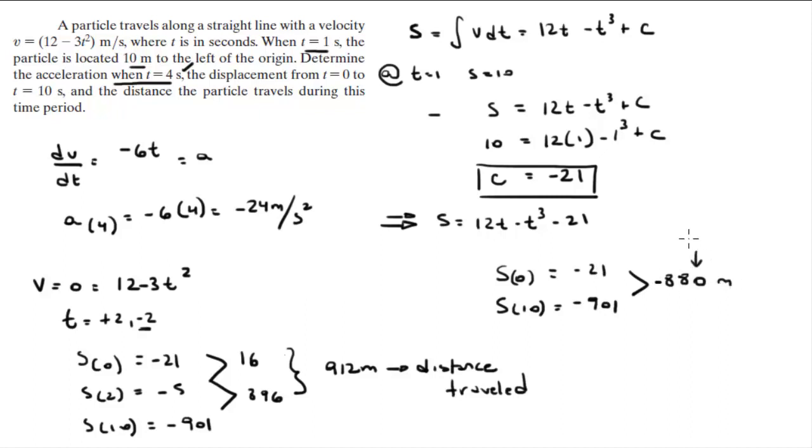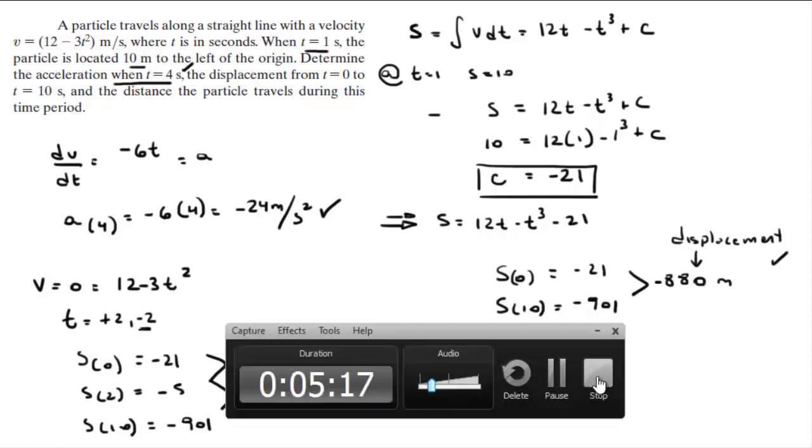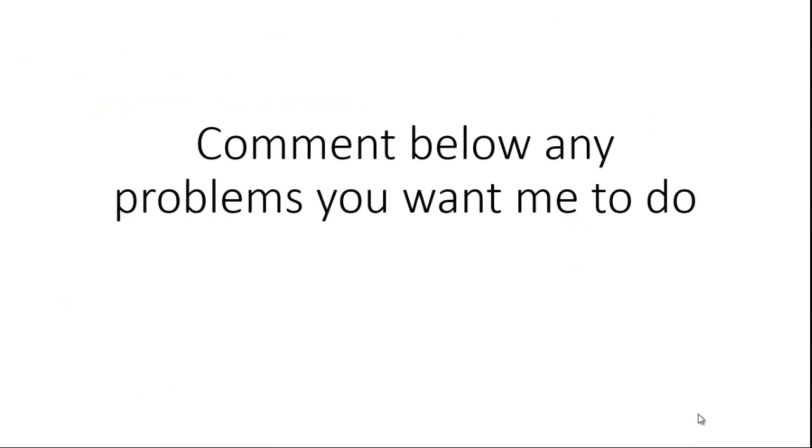So this is the displacement, and this is the distance traveled, and the acceleration at t equals 4. Final answers. Please comment below if you want me to do any problems and I will be happy to help. Thank you.